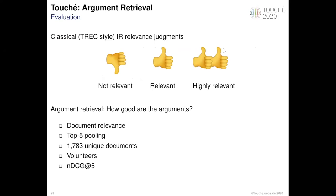For this year, we used only relevance judgments of the retrieved documents. Of course, we keep in mind that for argumentation it will also be important in future to evaluate argument quality. From the submitted runs by lab participants, we pooled the top five ranked documents for each topic, collecting about 2000 unique documents. We designed annotation instructions and recruited human assessors as volunteers, instructing them to judge documents as not relevant, relevant, or highly relevant. Afterwards, we used NDCG at 5 to evaluate the submitted participants' results.